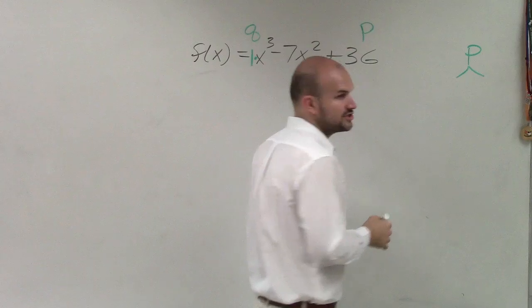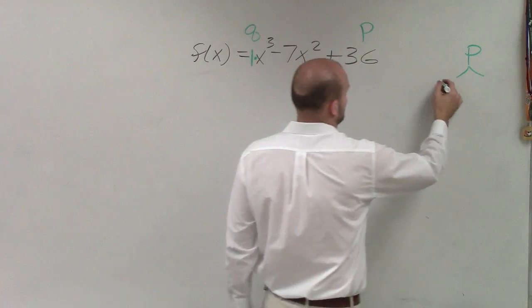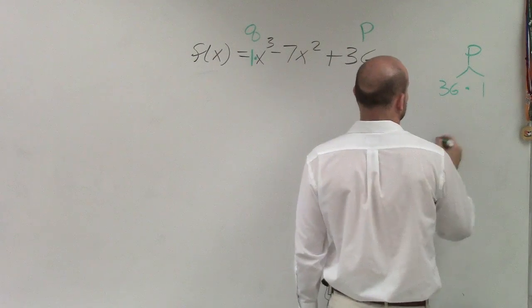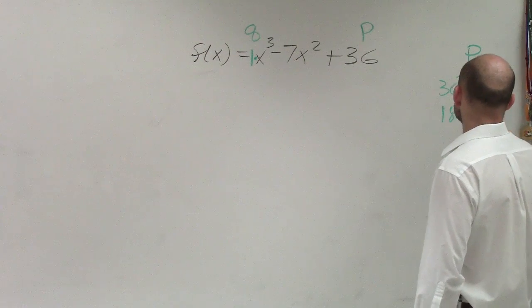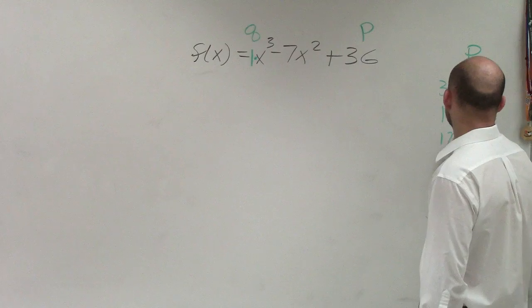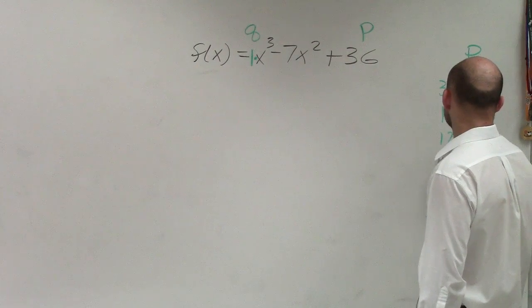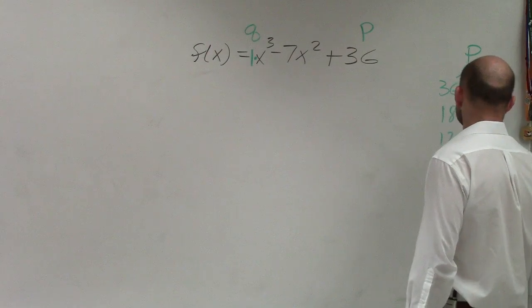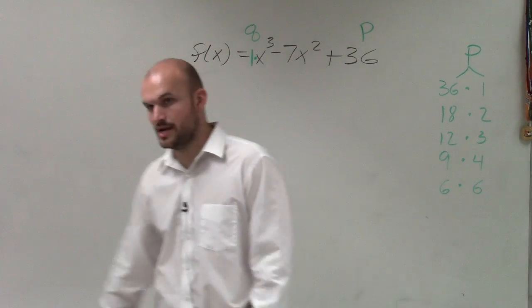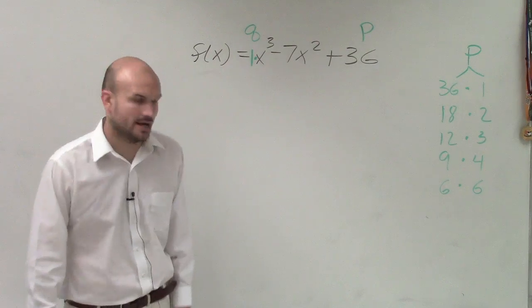So let's do p first, which is 36, right? So we have 36 times 1. We have 18 times 2. We have 12 times 3. We have 9 times 4. And we have 6 times 6, right?